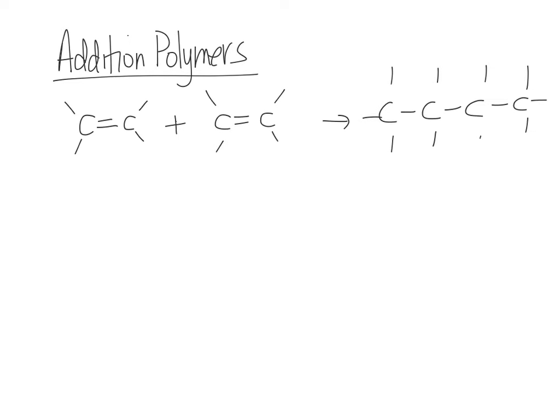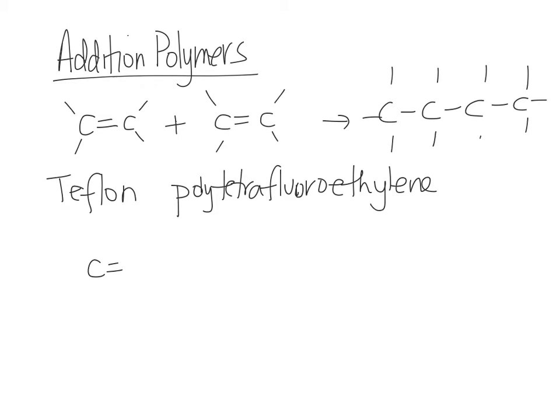Teflon, that non-stick coating on your frying pans. Teflon is polytetrafluoroethylene. Ethylene is another way to say ethene, it's a common name for ethene. So polytetrafluoroethylene. So each carbon is bonded to two fluorines. So there's four in total.